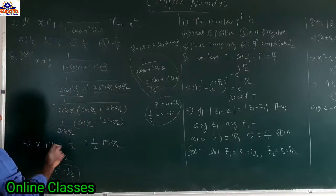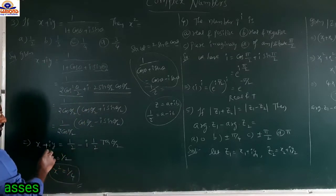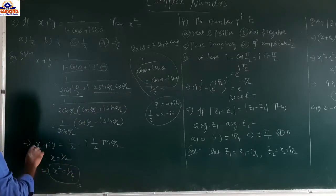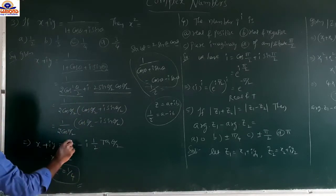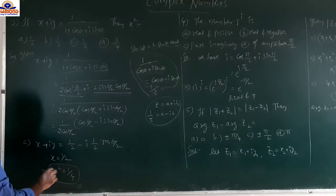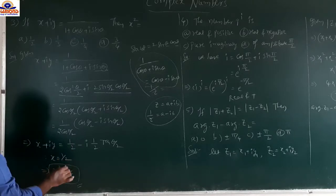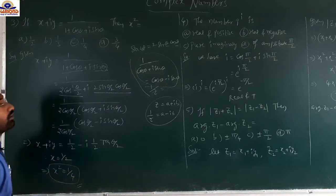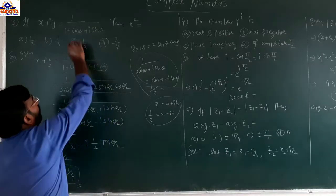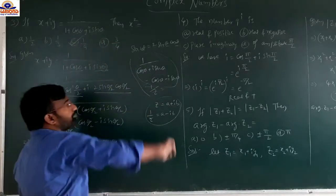Comparing real and imaginary parts on both sides, the real part gives x equals 1/2. Squaring both sides: x² equals 1/4. So option is c.